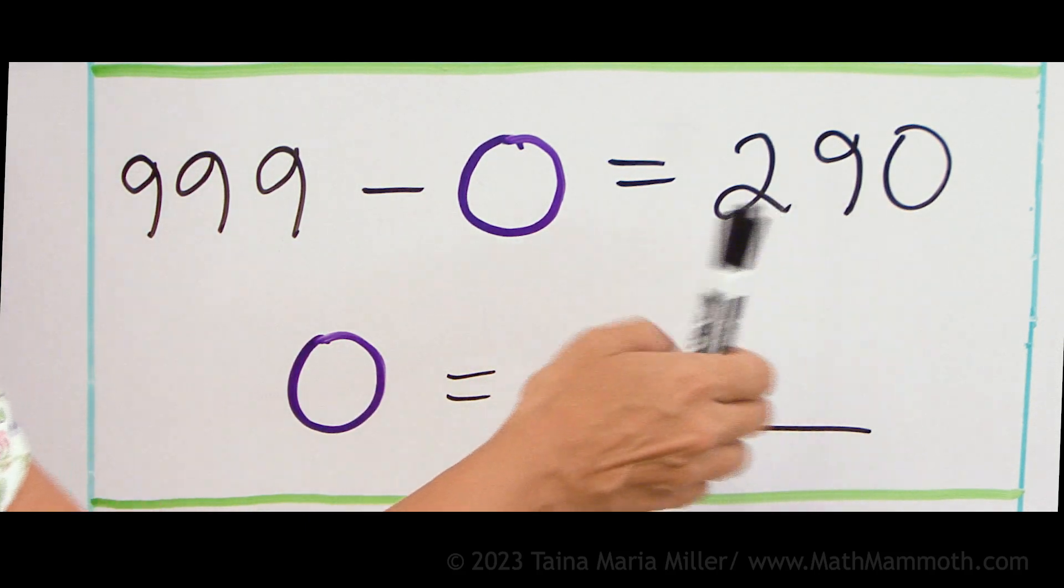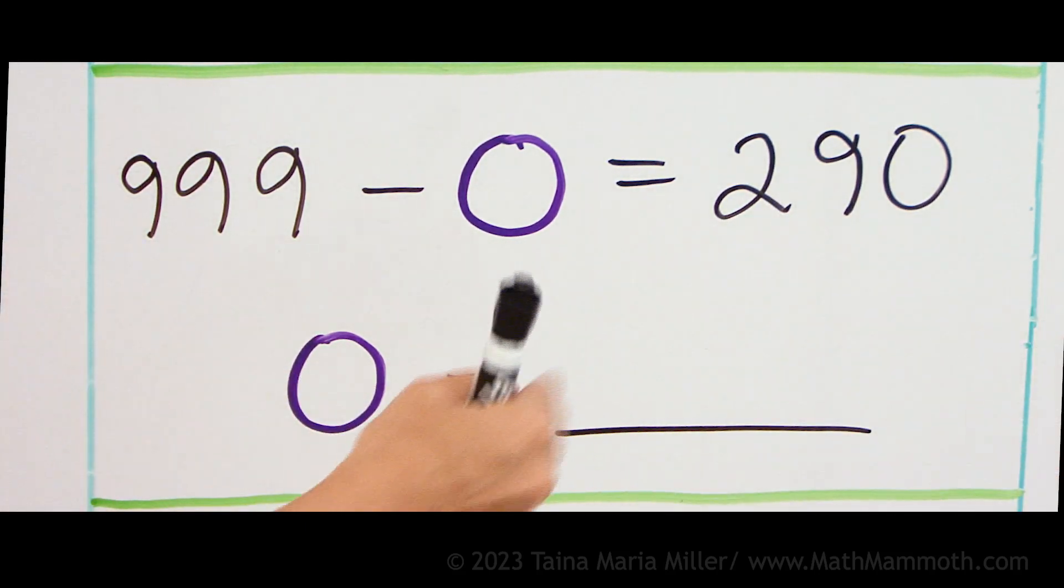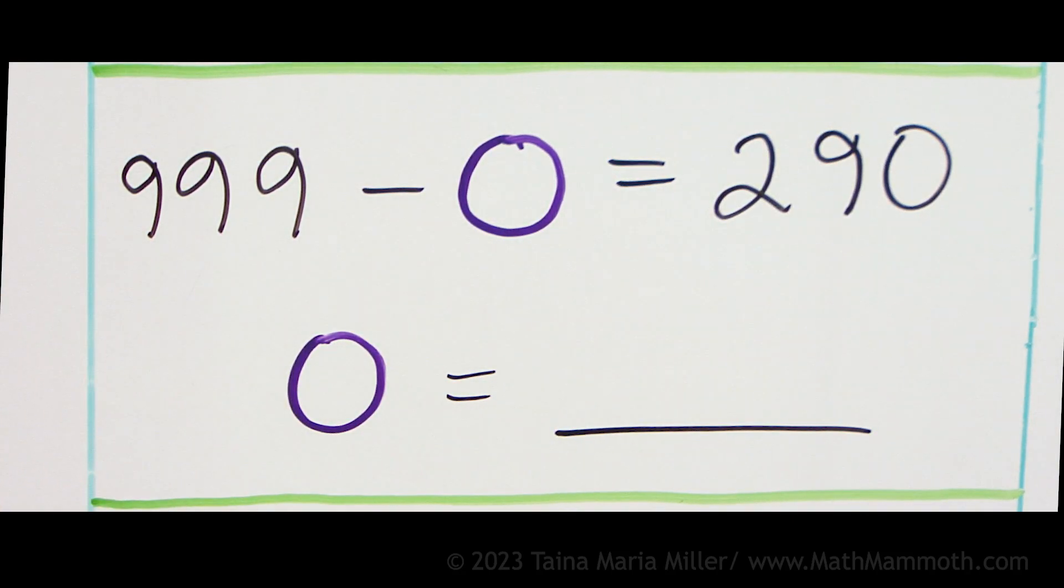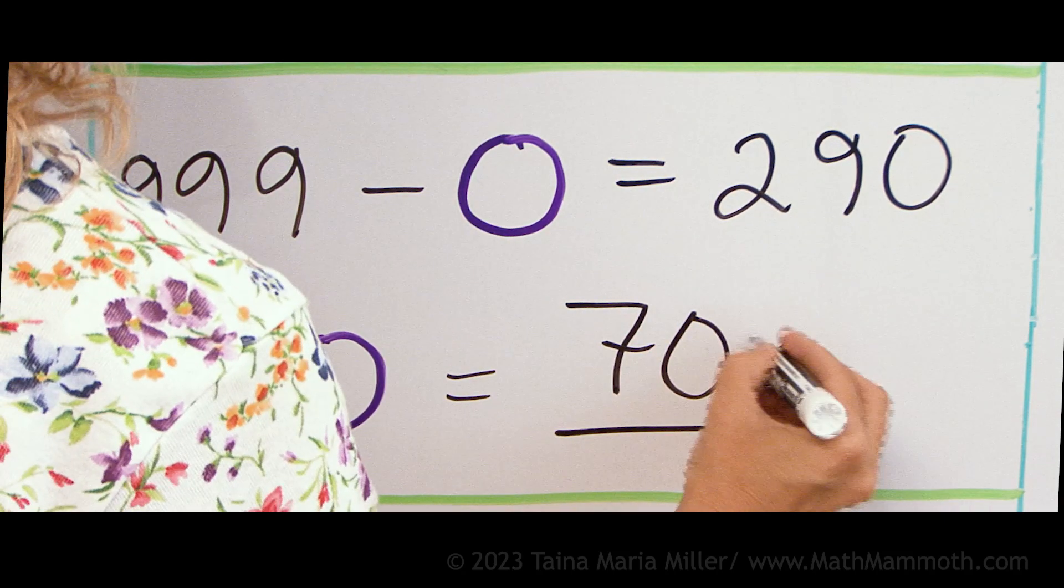But it goes down more. It is 299, 290. It is 9 more that we're subtracting. So this is then 709, right?